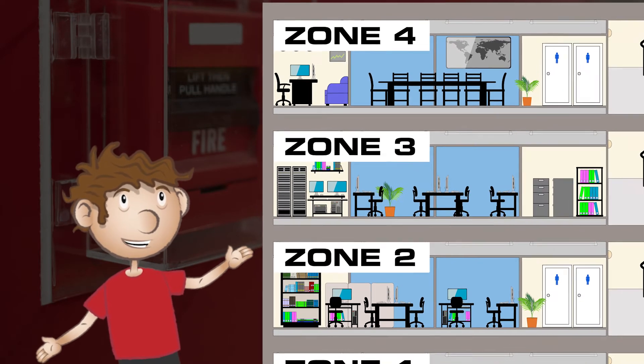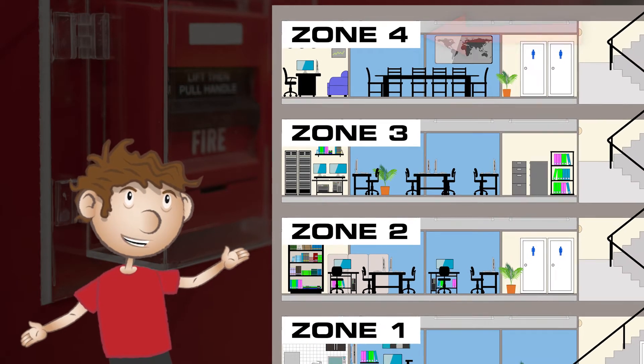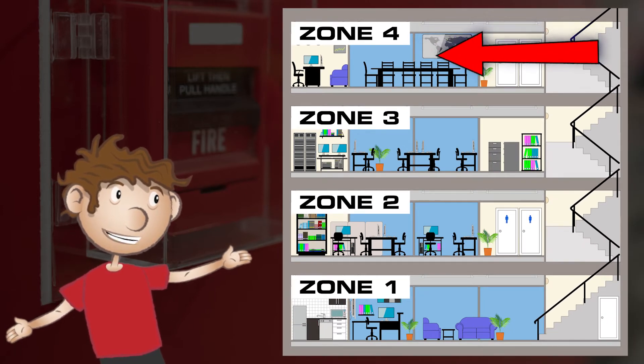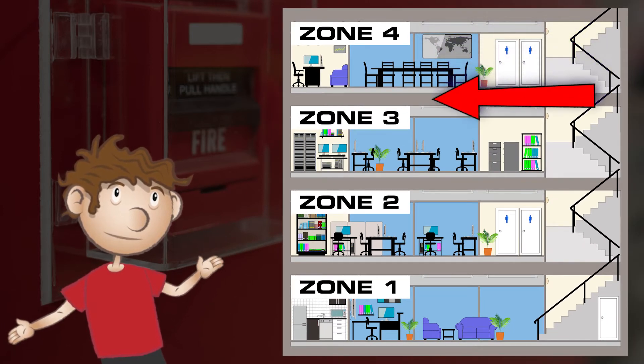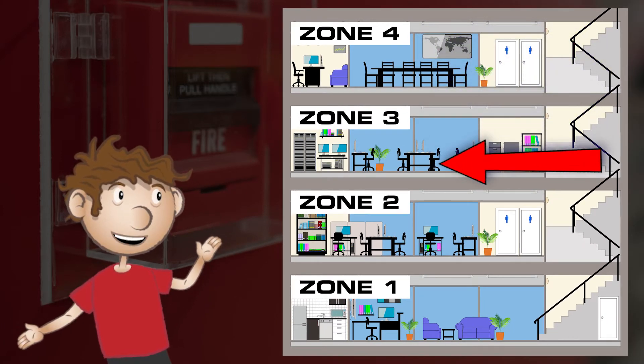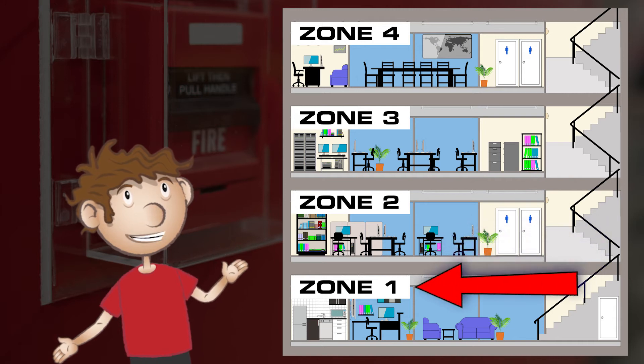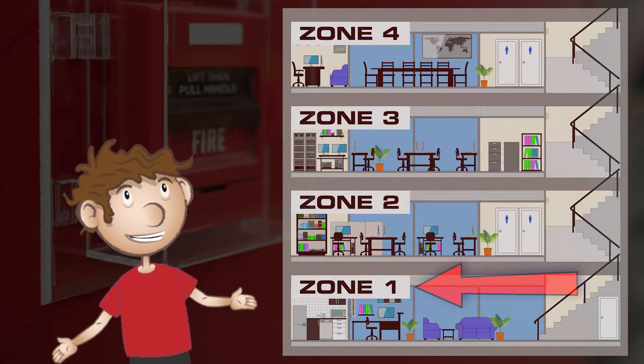For example, if your building has four floors and each floor is set up as a zone, the fire department can identify which floor the fire is located on based on the zone that is activated.